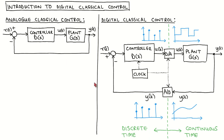Let's now look at the digital classical control configuration — that is, when the controller is implemented in a digital processor. The plant with its input and output is unchanged. However, everything else exists in the discrete time domain.